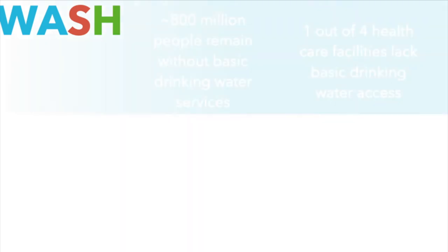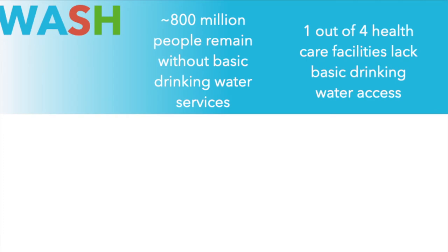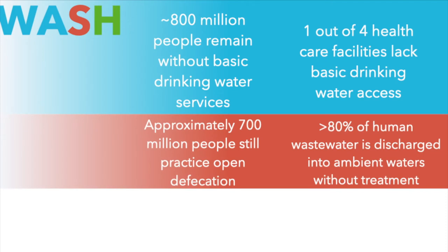The SDGs have been built on the story of the MDGs, and one key outcome was the WASH initiative from UNICEF. WASH — which stands for Water, Sanitation, and Hygiene — is a broad program that helps measure the impacts of improving water, sanitation, and hygiene, and has established much better-defined metrics for tracking success in SDG 6. Key WASH statistics: about 800 million people remain without basic drinking water services, and about a quarter of healthcare facilities in the world lack basic drinking water access. Approximately 700 million people still practice open defecation globally, and over 80% of human wastewater is still discharged into ambient waters without any treatment.